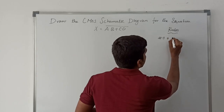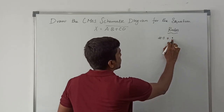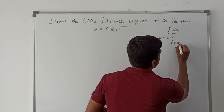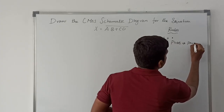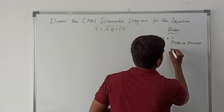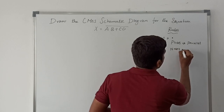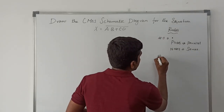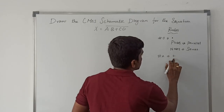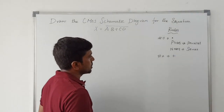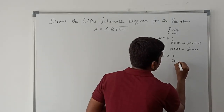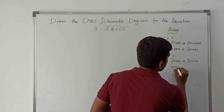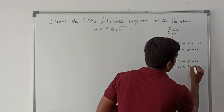Rule number one: when a dot operation is involved in the boolean expression, PMOS transistors are connected in parallel and NMOS transistors are connected in series. Rule number two: when a plus operation is involved in the boolean expression, PMOS transistors are connected in series and NMOS transistors are connected in parallel.